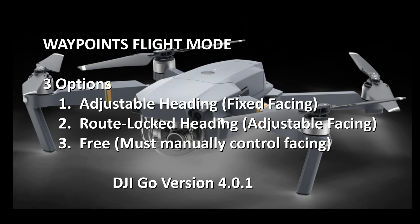In summary: adjustable heading really should be called something like fixed facing, because you have no control over the yaw. The second option, route linked heading, you do have control over the yaw, so it should be called something like adjustable facing. The third option, free, you must manually control the facing of the Mavic. Again, this is for DJI Go version 4.0.1.